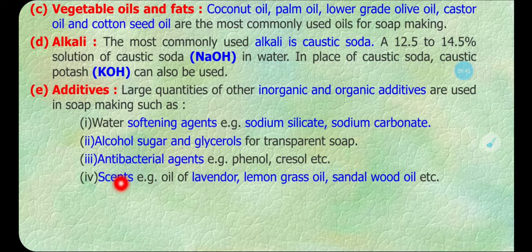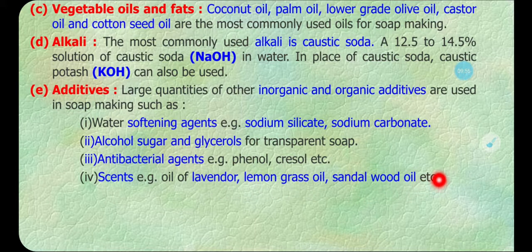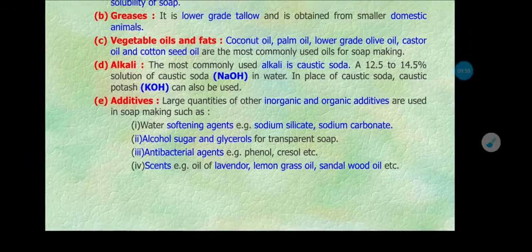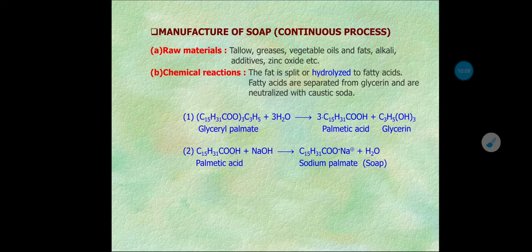Fourth, scents or perfumes are used in the manufacture of soap — for example, lavender, lemongrass oil, and sandalwood oil. There are several additives that can be added during the manufacture of soap to get a variety of soaps according to the requirements of the market or consumer.